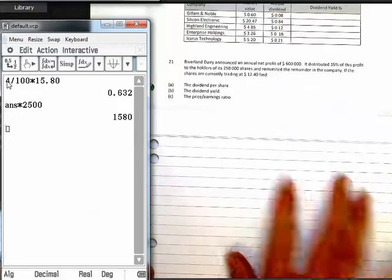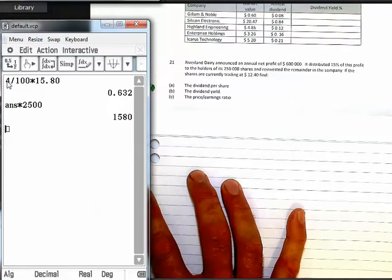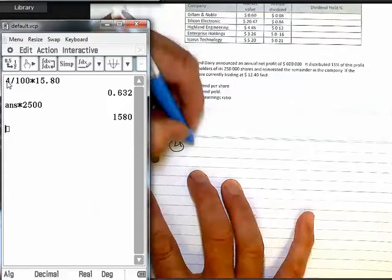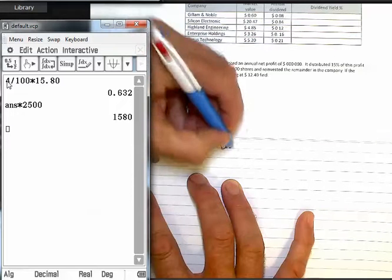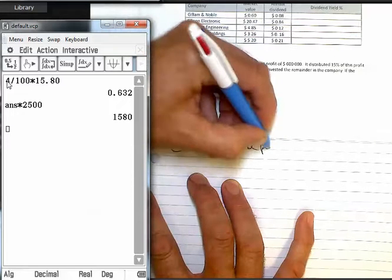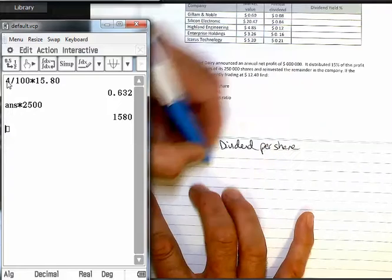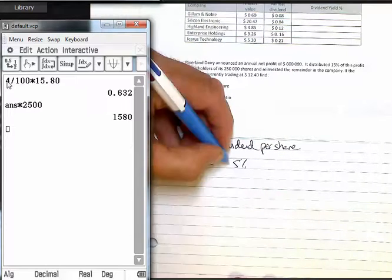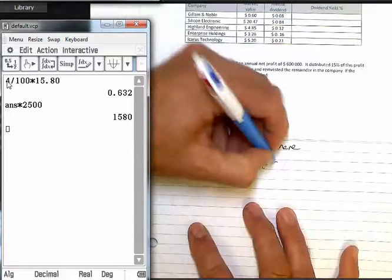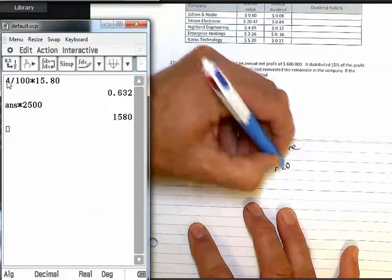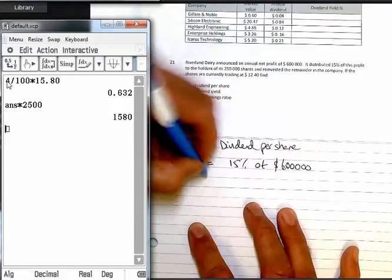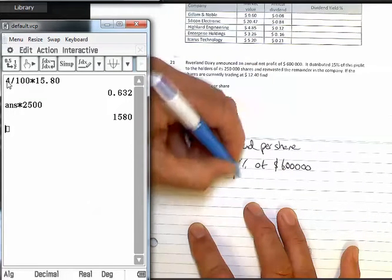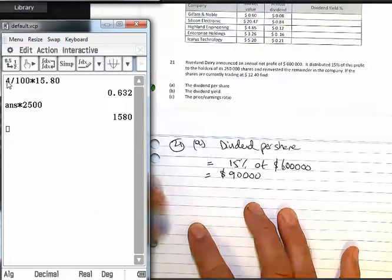The shares are currently trading at $12.40. So dividend per share, well, that's 15% of the $600,000, which is the total amount the company's paying out. And that will give $90,000 in total.